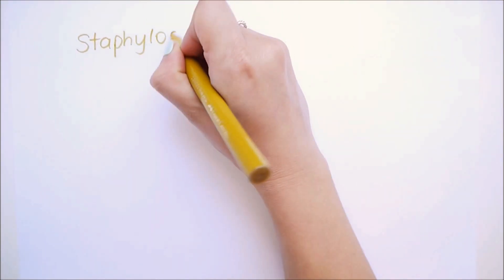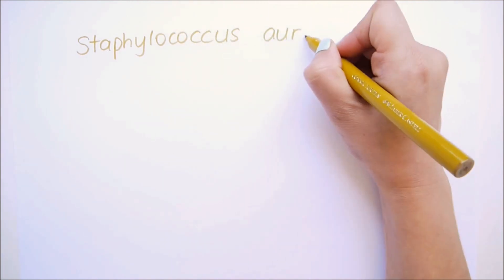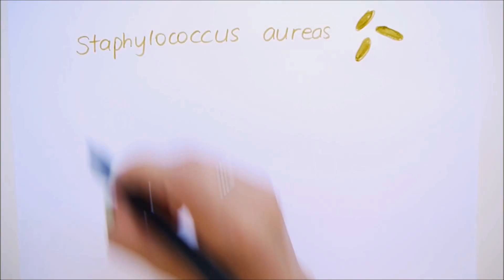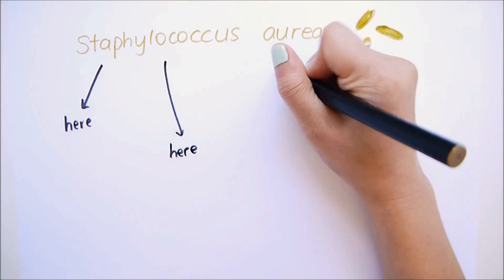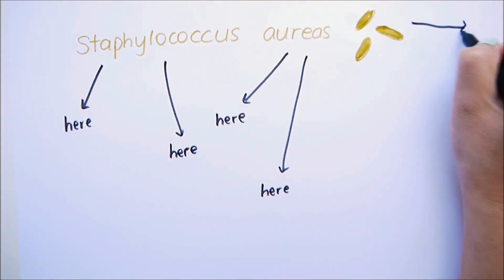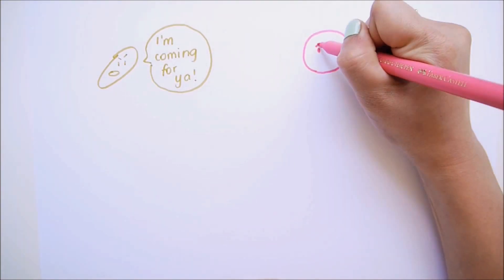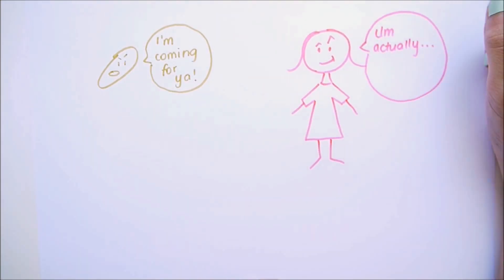TSS is caused by a bacteria called Staphylococcus aureus. Yep, that's the one that causes golden staph. These bacteria are actually everywhere, from the air, to your skin, to your mucosal membranes which includes your vagina, to the screen you're probably watching this on. But we're immune to it. In other words, our bodies are good at not letting these bacteria harm us. We kill them first.